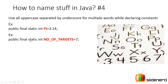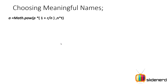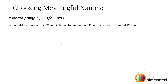Now, choosing meaningful names. Take a look at this formula: `a = Math.pow(...)` — do you figure out what is going on here? I'm reading it and I can't understand what is being done. On the other hand, consider: `amount = Math.pow(principal, ...) * interest * numberOfYears` — seeing this second statement gives you a rough idea that we're trying to find some type of interest. That is why you choose meaningful names for your variables — so the person reading your code understands what you're trying to do in each statement.